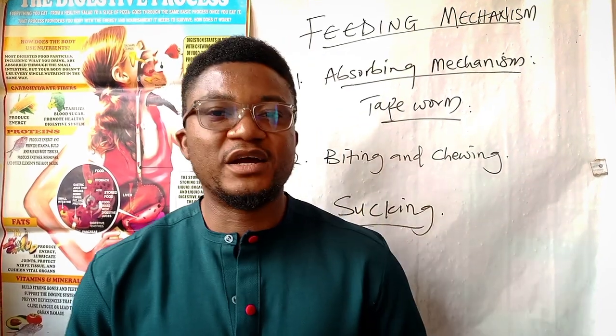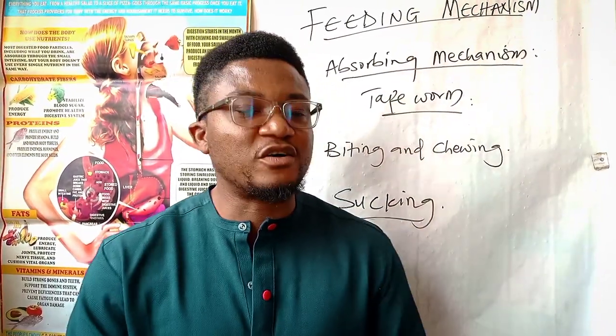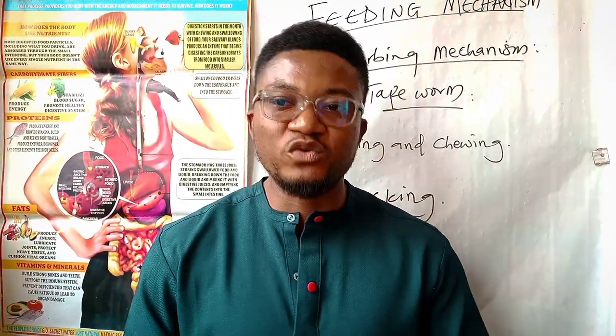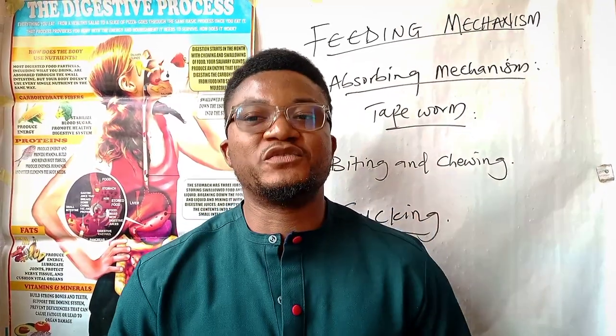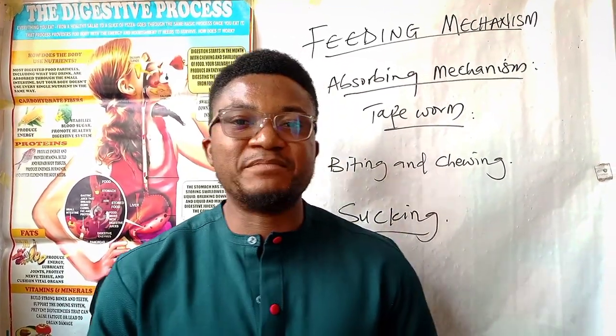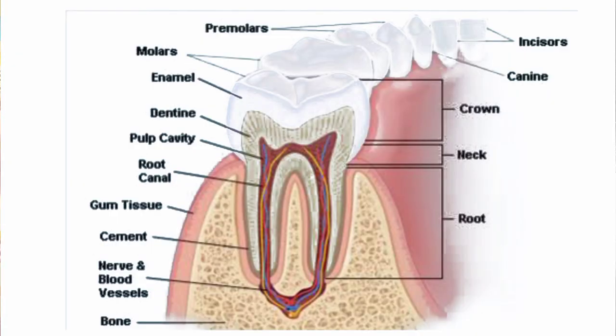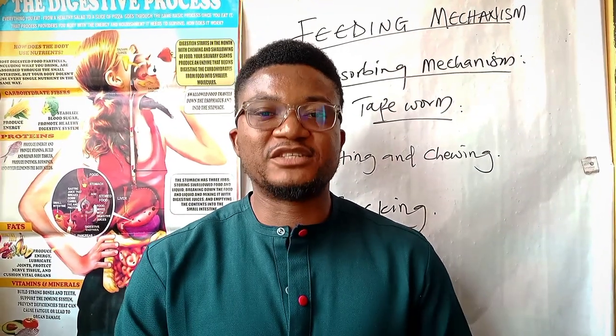Number four is the grinding mechanism, which is common among organisms such as man, goats, sheep, lion, etc. These animals are capable of grinding food before swallowing. The grinding of food is aided by the presence of hard and strong teeth made of enamel and dentine. The animals are adapted for this mechanism through the presence of the premolars, the incisors, and every part of the teeth that enables them to carry out grinding.